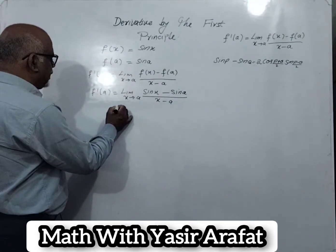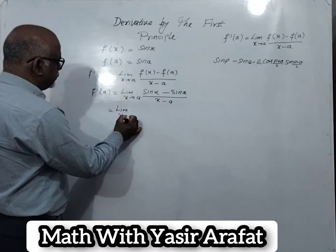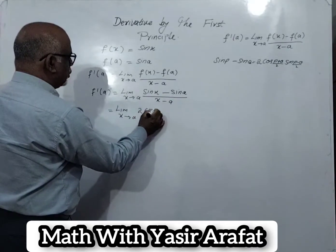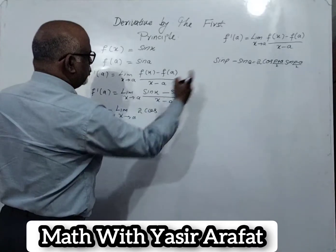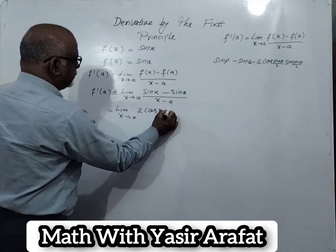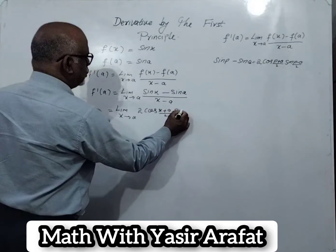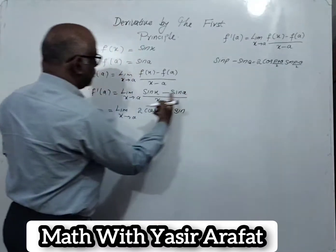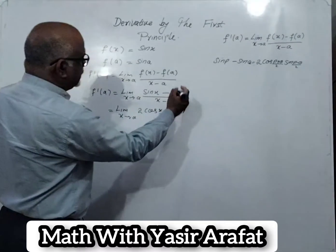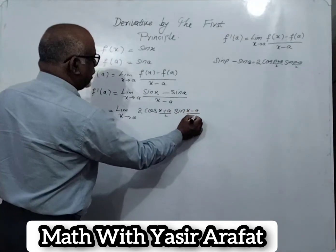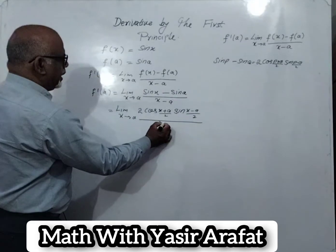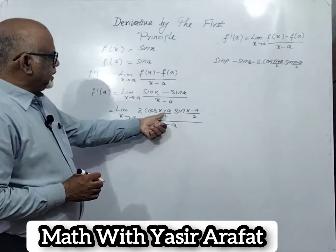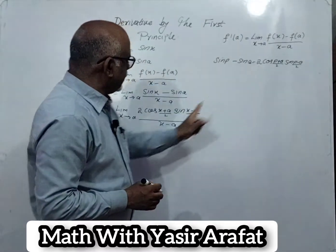So sin x minus sin a equals 2 cos((x plus a)/2) times sin((x minus a)/2), whole divided by x minus a. This is the formula we have to use in the numerator.